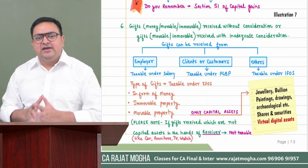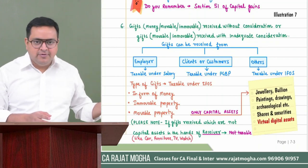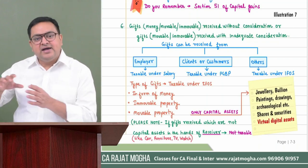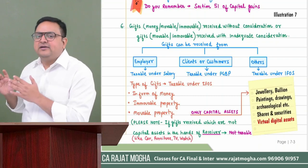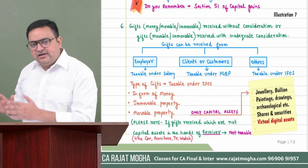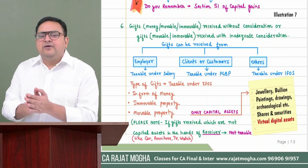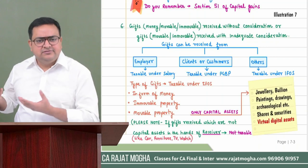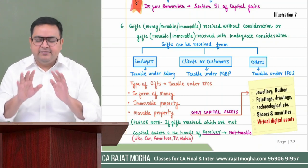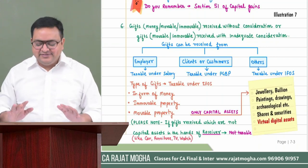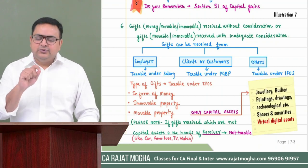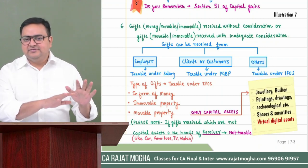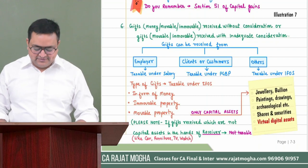Other gifts — those not from an employer and not related to business or profession — are taxable under IFOS. These are gifts which are not in the nature of salary and not in the nature of PGBP. We will also see the exceptions, such as gifts from relatives which are exempt.